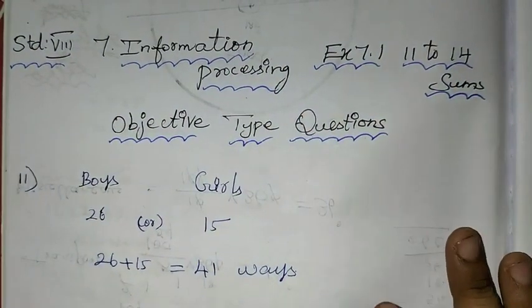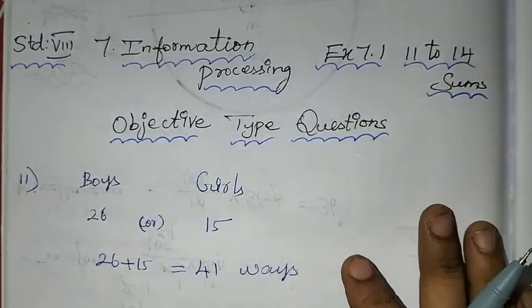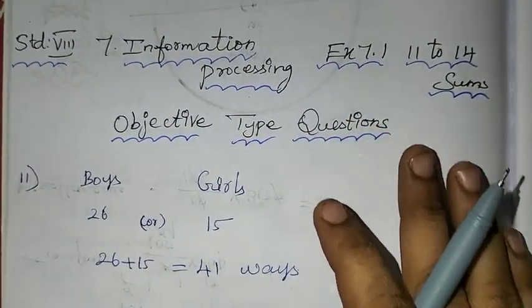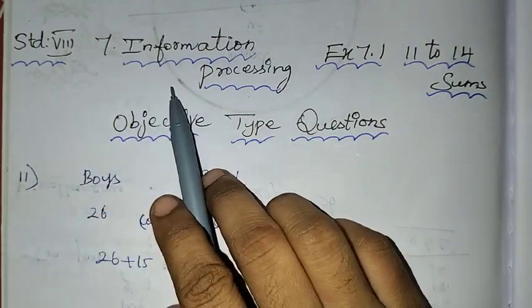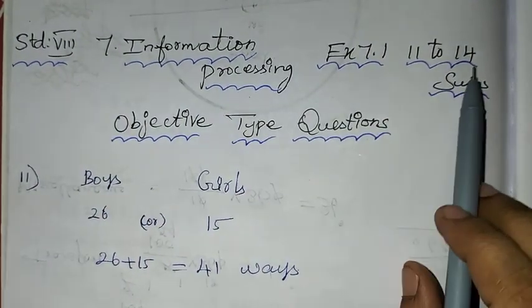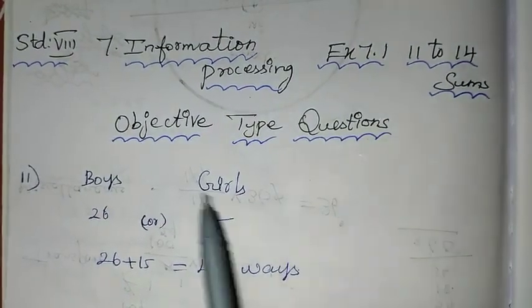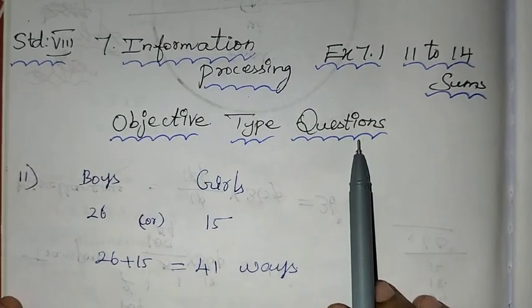Hello students, welcome to 1 Plus 1 channel. Next video is Age Standard Chapter 7, Exercise 7.1, sums 11 to 14. Objective type questions.